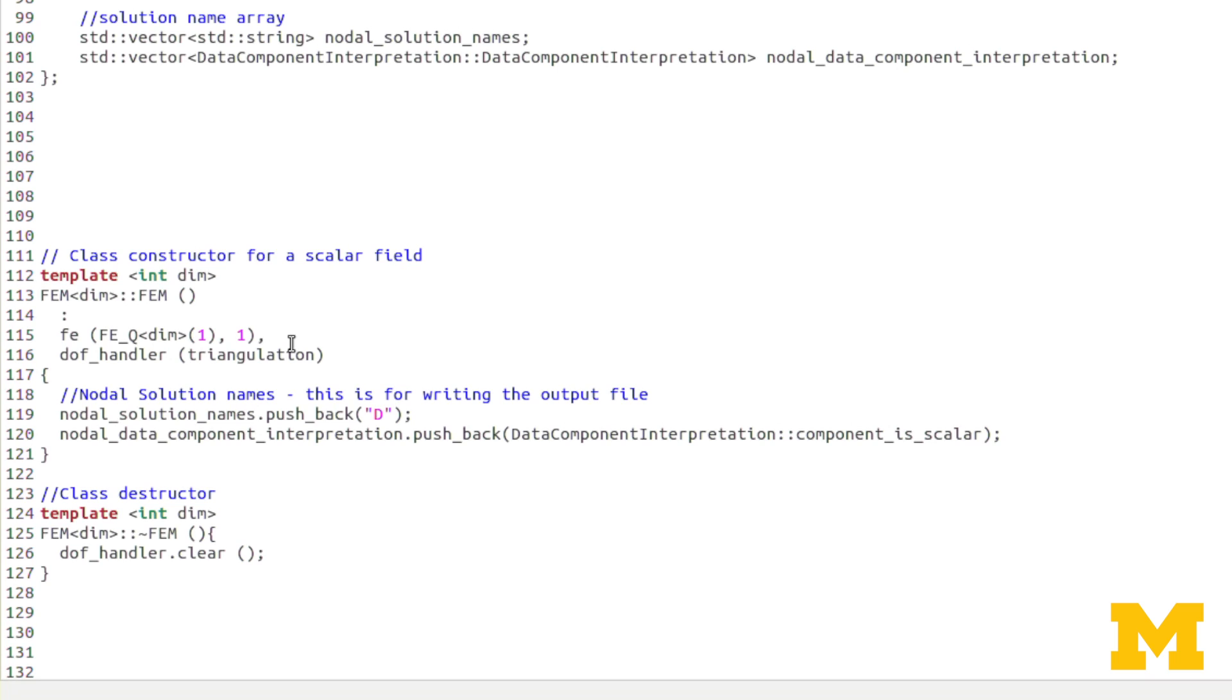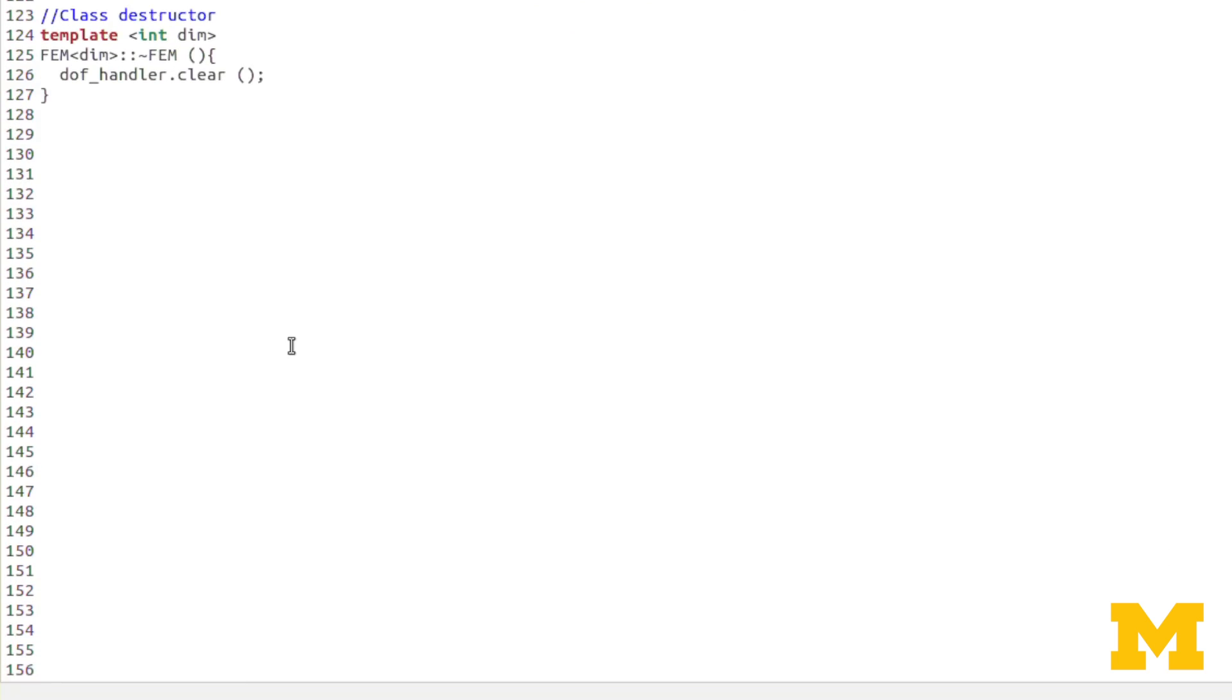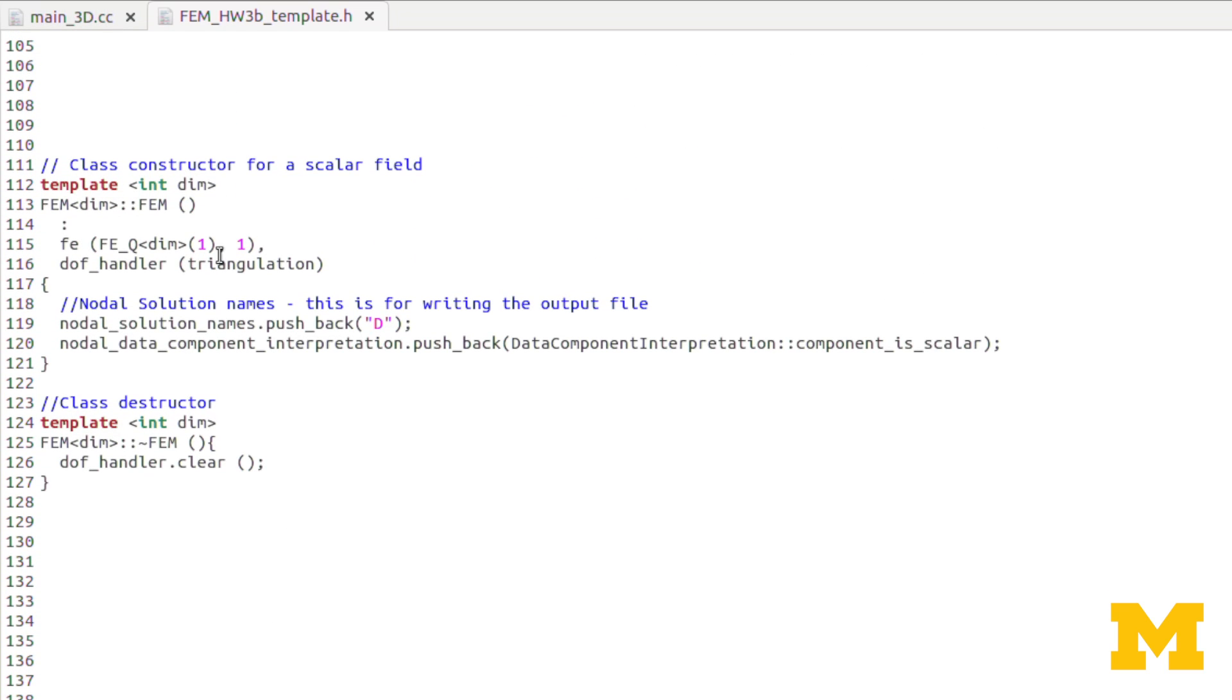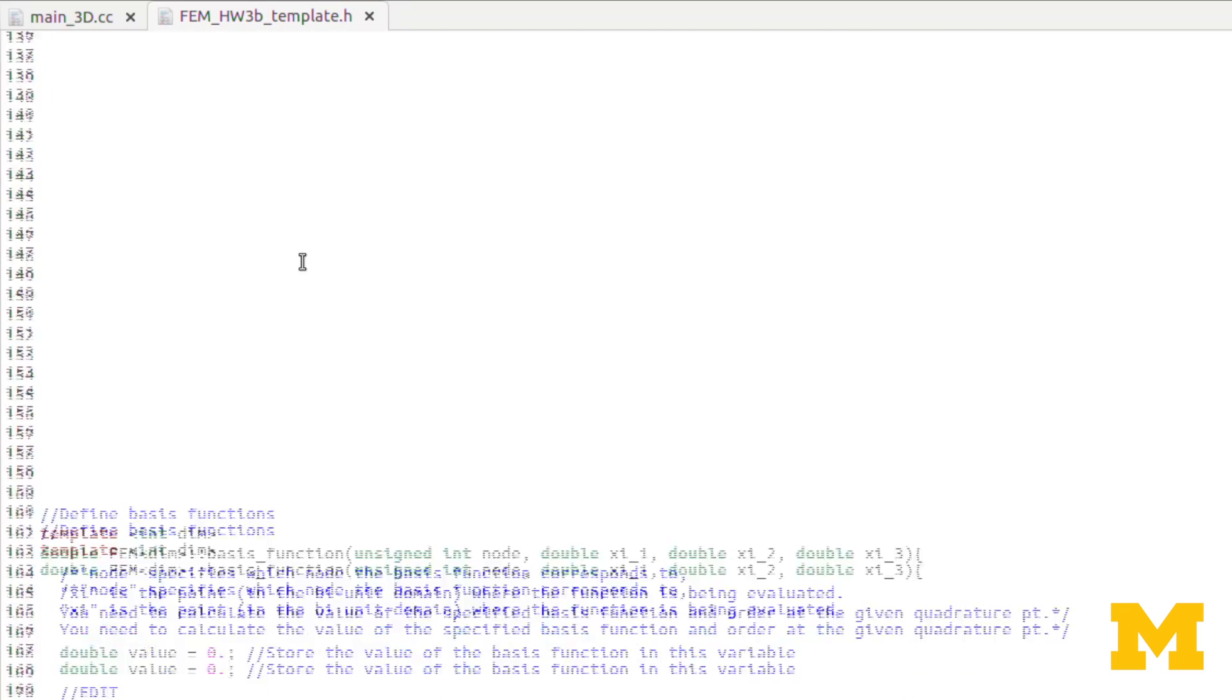We'll scroll down. The constructor, you can see, is the same. I don't know if I pointed this out in the 2D problem. Here, this is one because we're using linear basis functions, always. And this is one, because there's one degree of freedom per node. The destructor is also the same.